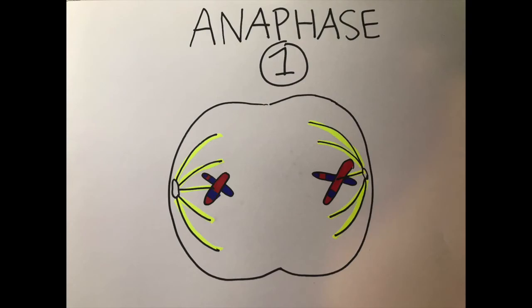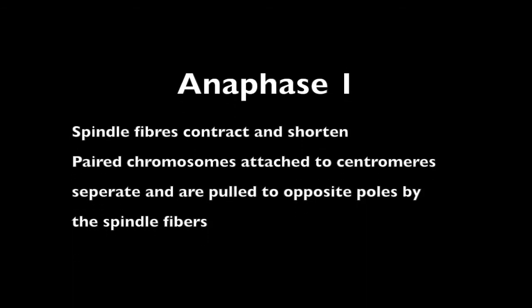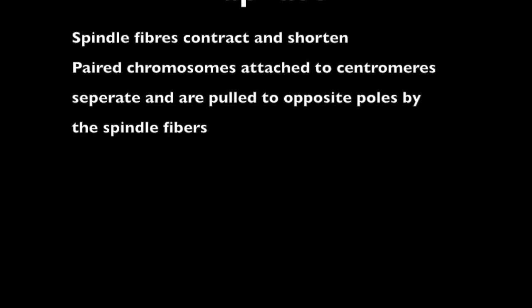The third stage in meiosis is anaphase. During this stage, spindle fibers contract and shorten. The paired chromosomes attached to centromere separate and are pulled to opposite poles by the spindle fibers.